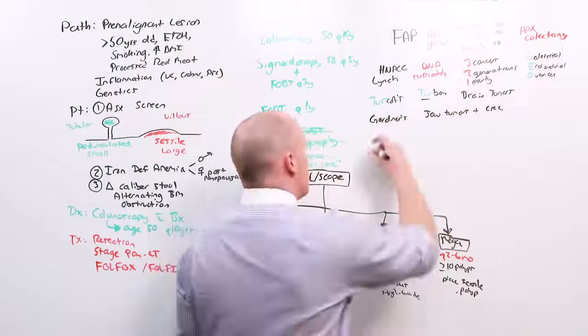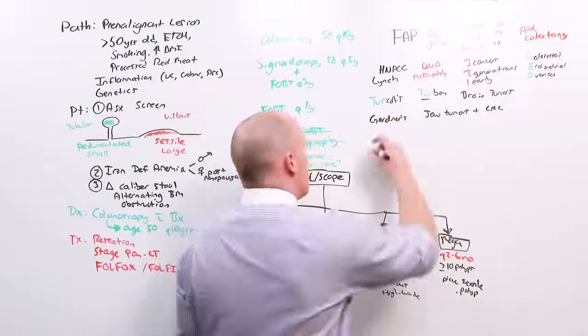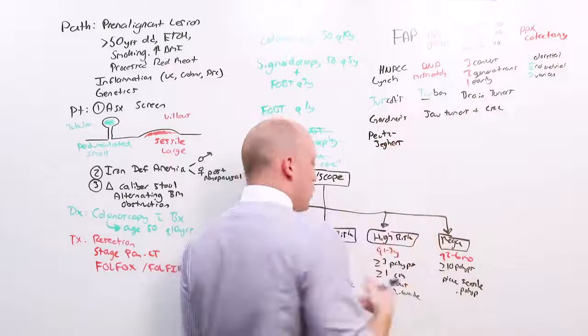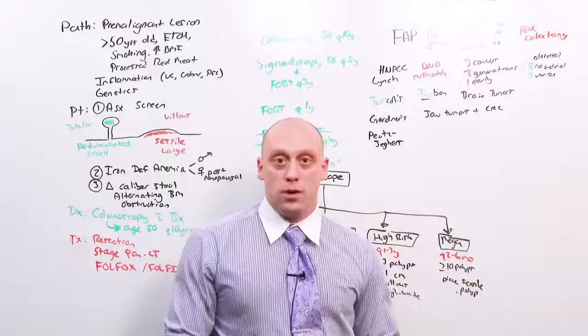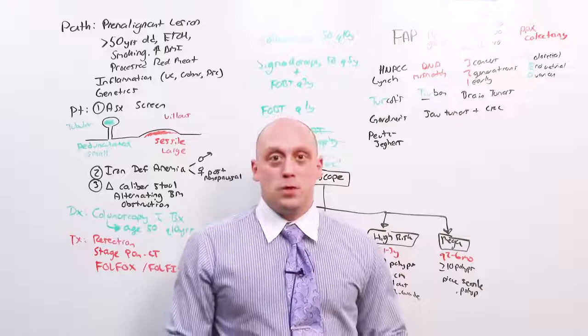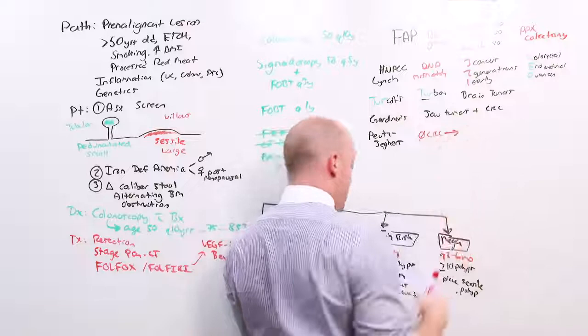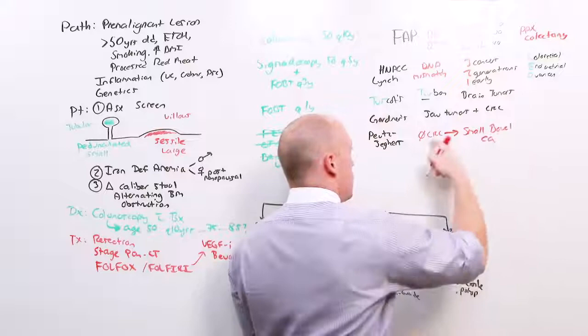And then the one that throws people for a loop because it's taught in the colorectal cancer section but has nothing to do with colorectal cancer. And that is Peutz-Jegers. And the way this is going to come up to you on your test, you're going to see a picture, a photograph of a mouth, and there's going to be freckles, dots on the lips. Peutz-Jegers. Peutz-Jegers does not have colon cancer. Instead, it has cancers of the small bowel. Even though they'll be polyps, they're not cancerous, but you have to do an endoscopy to find the cancers of the small bowel instead.